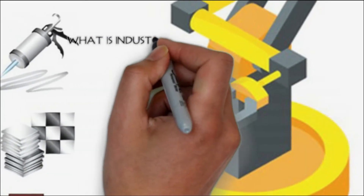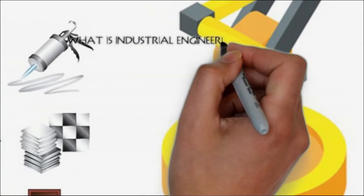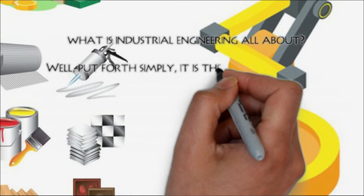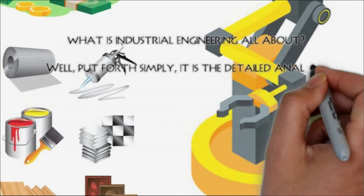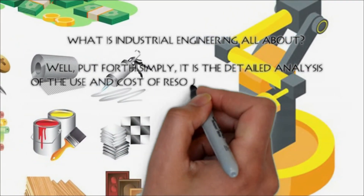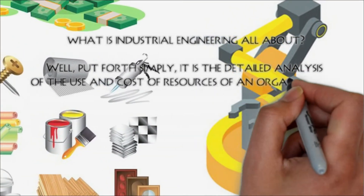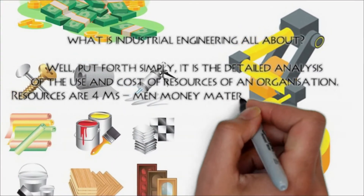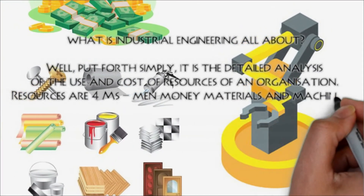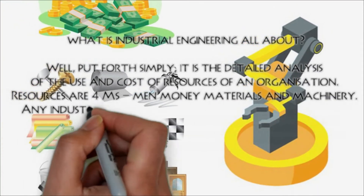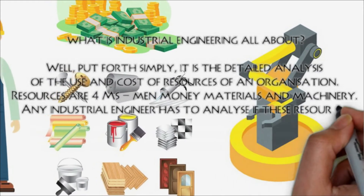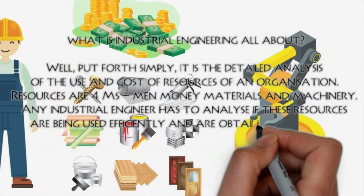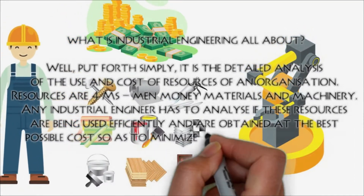So what is industrial engineering all about? Simply put, it is the detailed analysis of the use and cost of resources of an organization. Resources are the 4Ms: men, money, materials, and machinery. Any industrial engineer has to analyze if these resources are being used efficiently and are obtained at the best possible cost.